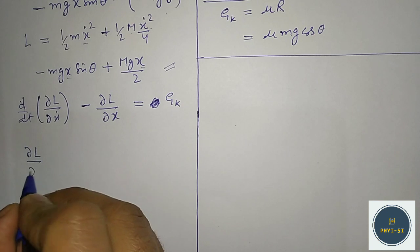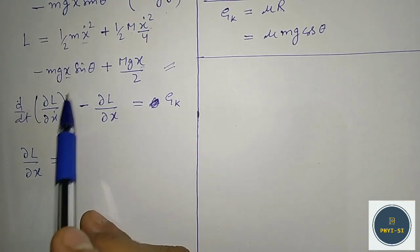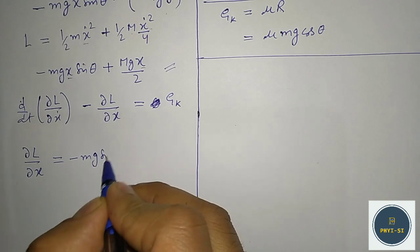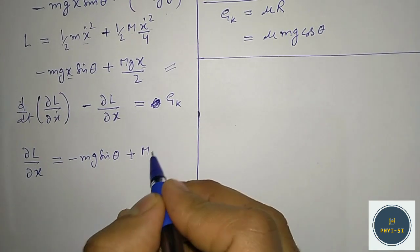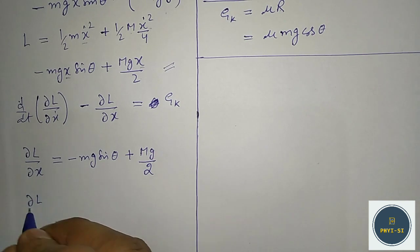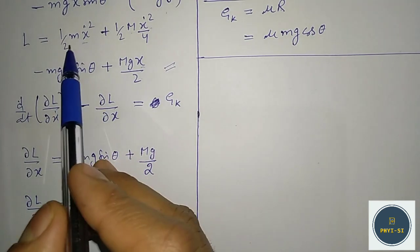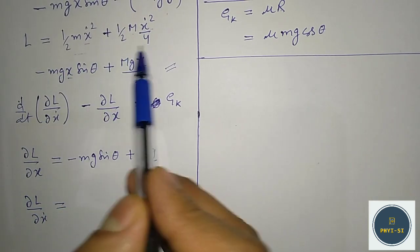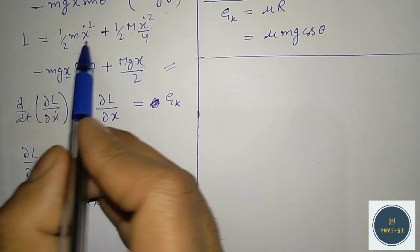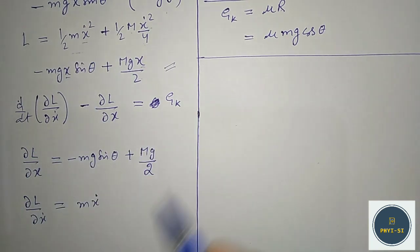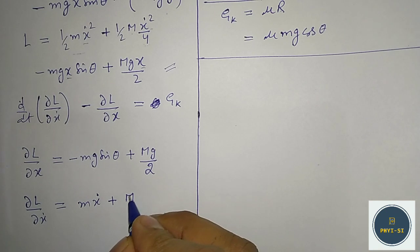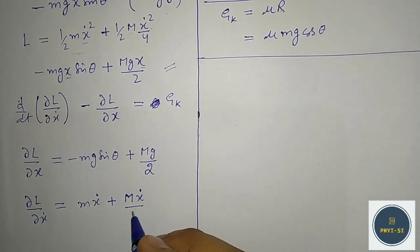Now let us find the derivatives. From the Lagrangian equation, ∂L/∂x = −mg sin theta + Mg/2. And ∂L/∂x-dot = m times x-dot plus capital M times x-dot divided by 4, taking the derivative with respect to x-dot.